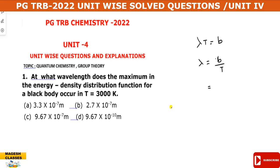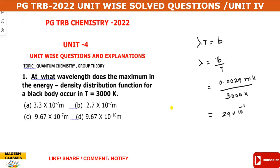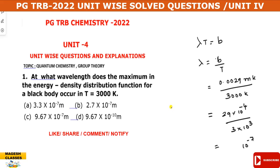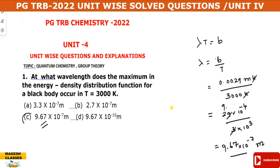Wien's constant value is 0.0029 m·K, that is 2.9 × 10⁻³ m·K, and the temperature given is 3000 K, which is 3 × 10³ K. Dividing gives 10⁻⁷ as the power, and the final answer is approximately 9.67 × 10⁻⁷ meters. The answer is option C.